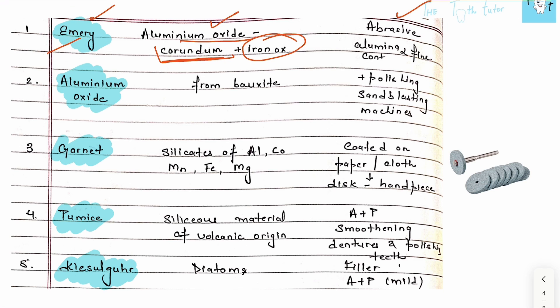There are many names for aluminum oxide depending on its composition and extraction stage. It also contains iron oxide as an impurity, but that can also act as an abrasive. It's an abrasive, and the more aluminum oxide you have, the finer the polishing or abrasive agent. Then we have aluminum oxide itself, extracted from bauxite, used for polishing and in sandblasting machines.